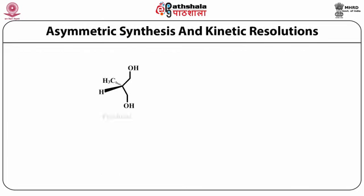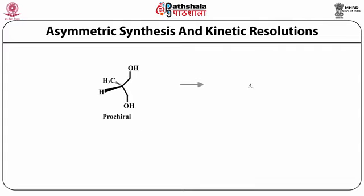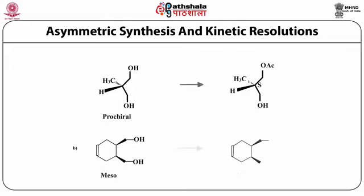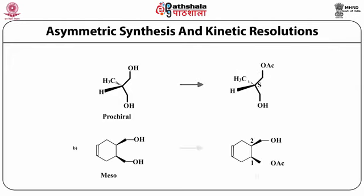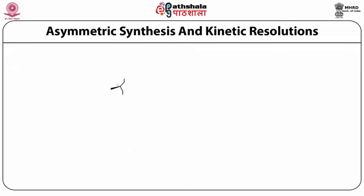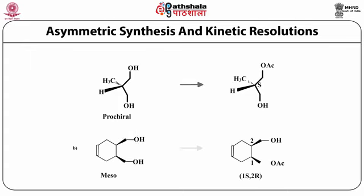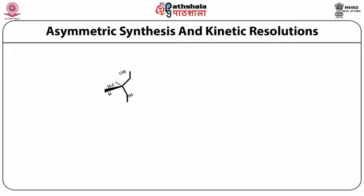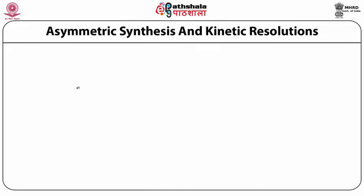There are two ways of obtaining a chirally pure compound, both of which can use enzymes as biocatalysts. First is to carry out asymmetric synthesis. Second is to resolve the reaction mixture kinetically by exploiting the stereoselectivity of enzymes. In asymmetric synthesis, all the substrates can theoretically be converted into the desired enantiomer, giving a yield of 100% and an enantiomeric excess of 100%.